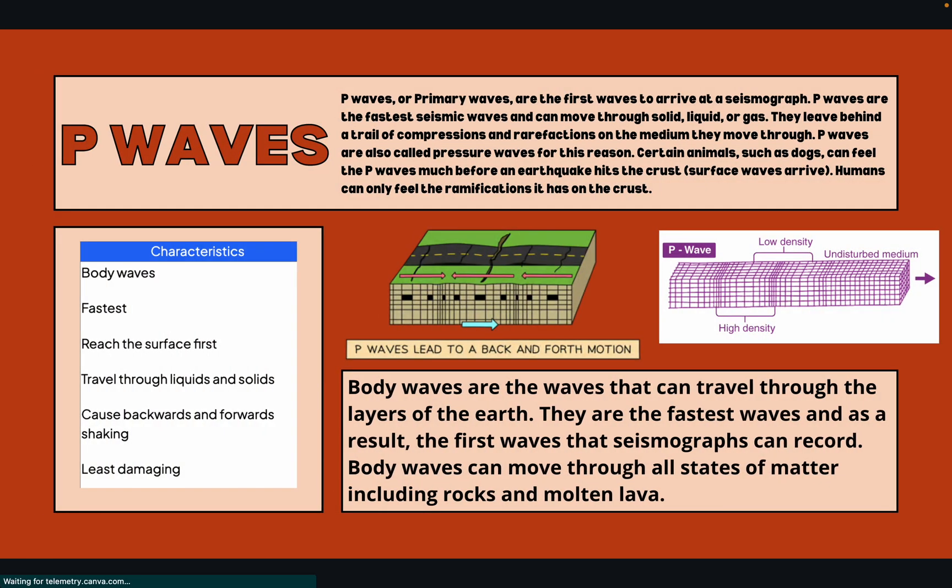P waves, or primary waves, are the first waves to arrive at a seismograph — one of the ways you measure and detect earthquakes. P waves are the fastest seismic waves and can move through solid, liquid, or gas. They leave behind a trail of compressions and rarefactions of the medium they move through. P waves are also called pressure waves for this reason.